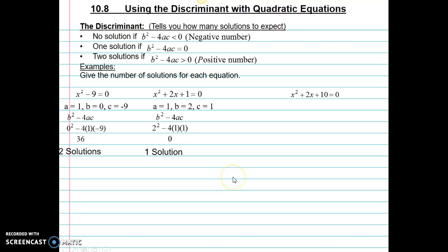And for our last example, identify a, b, and c. Write out the discriminant. Substitute and simplify. 2 squared is 4. 4 times 1 times 10 is 40. So 4 minus 40 would be negative 36. Since this is a negative number, that means that we would have no solution.